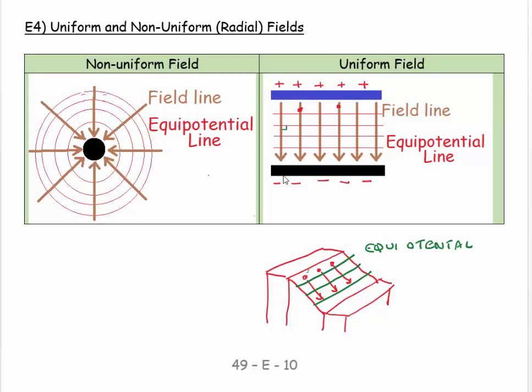If I take the other extreme where I have a non-uniform electric field, the probably most classic example is an isolated charge by itself. In this case I have a negative charge and I have the surrounding effect.